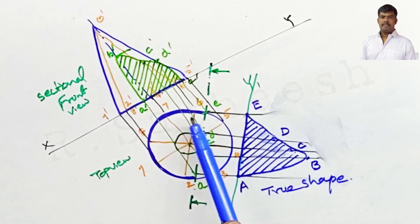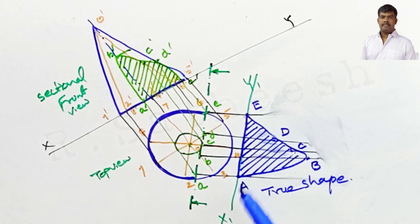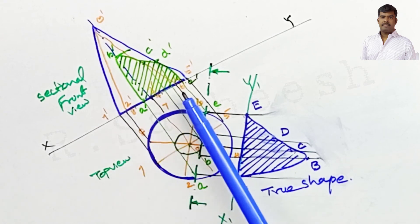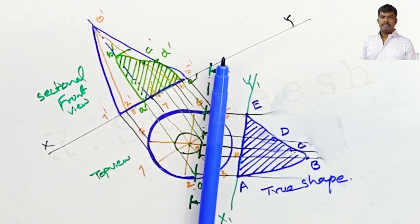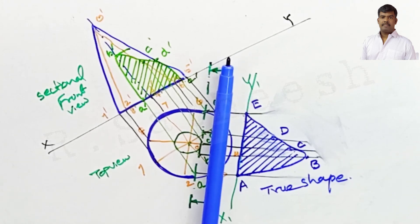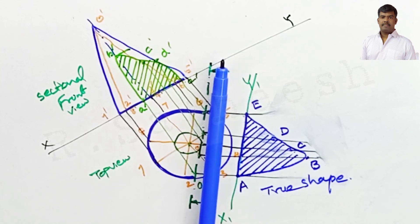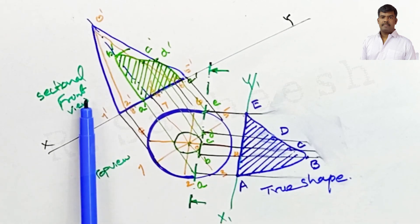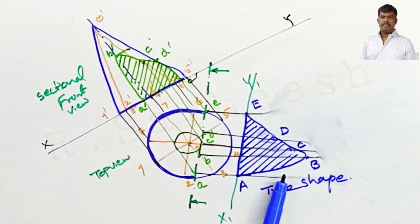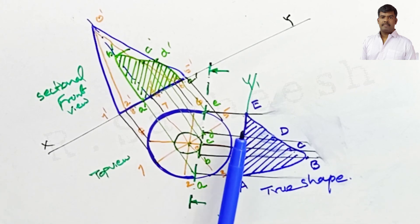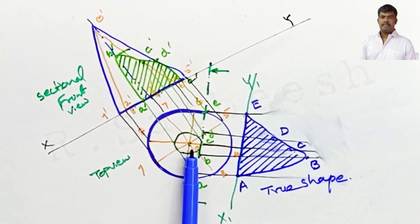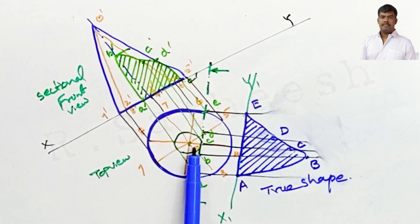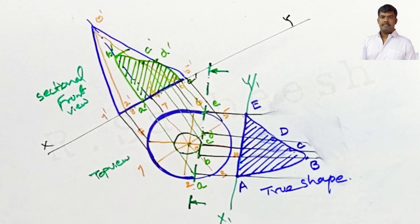In summary: the cone of base diameter 60 mm and axis 70 mm rests on its base on HP and is cut by a sectional plane perpendicular to HP and inclined at the given angle to VP. The top view, sectional front view, and true shape are drawn. The main condition is that the cutting plane passes 10 mm away from the axis, and this is the complete solution for the given problem.